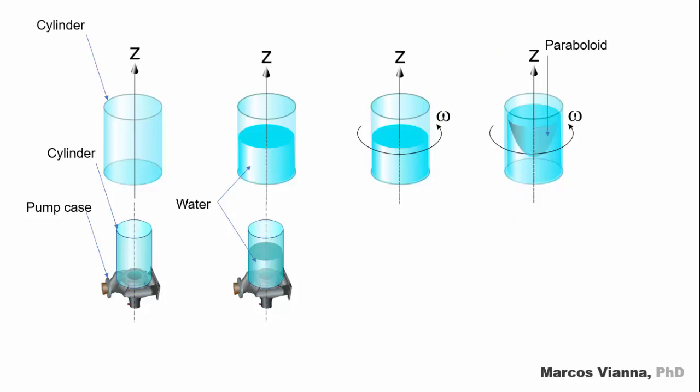We can prove that its surface has a parabolic shape. Or, in fact, as it is a three-dimensional surface, we say that it is a paraboloid. But we will do that in another video.